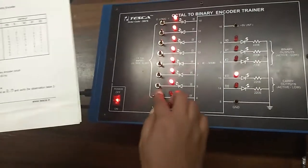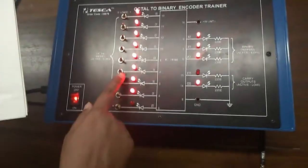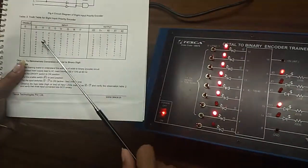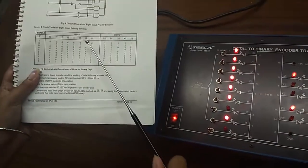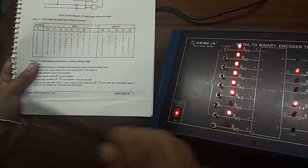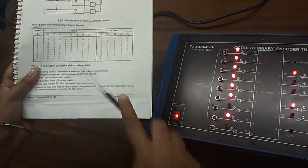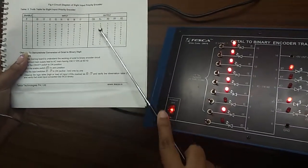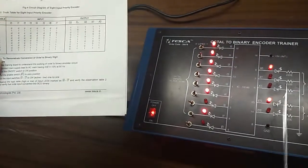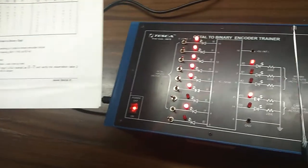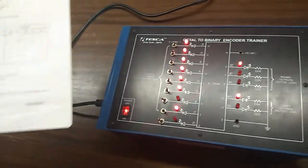Now, put this to high and give this 0. I am doing this, I7 is 1 and I6 is 0. So, output is GS is 0, E0 is 1, then A0 is 1 and A1, A2 is 0.